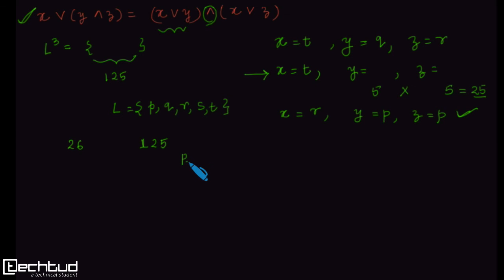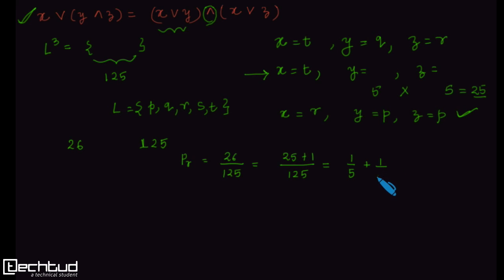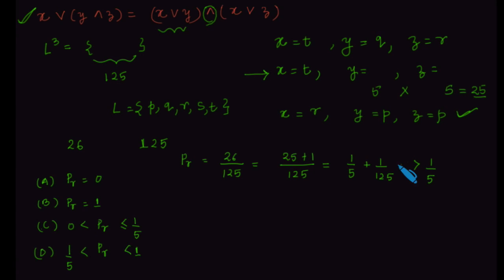The required probability is 26 divided by 125, which we can write as 25+1 over 125, or 1/5 + 1/125. This clearly shows that the probability is strictly greater than 1/5. The four options in the question show that the probability is upper bounded by 1, so the answer is D. Breaking the question down into smaller parts and solving them first is a better approach. Thank you for watching this video, goodbye and keep learning.